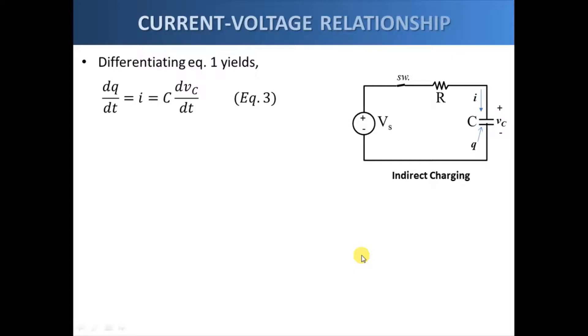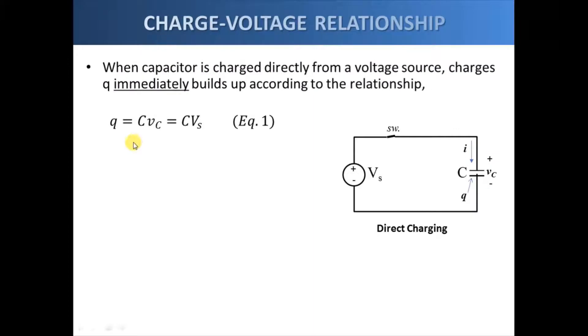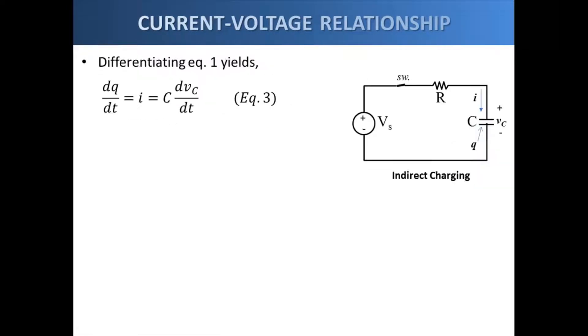Now let's say we differentiate equation 1, so equation 1 is this one. So let's differentiate both sides with respect to time, so we get this result. This is a very important relationship that says that the current that is flowing towards the capacitor is actually proportional to the time rate of change of the voltage across the capacitor.